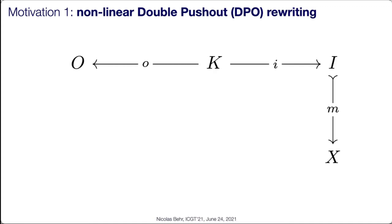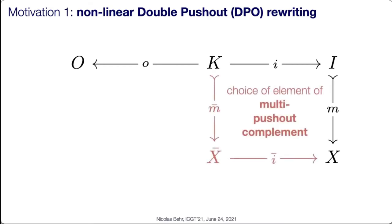The reason is that you want to construct the double push-out complement, and usually it's said you can't do anything if the top morphism — the eye — is not linear. As I will show in this talk, one interesting outcome of our work is that there is a universal categorical construction we call the multi-push-out complement, which permits you to proceed even if the rules are left non-linear or input non-linear.